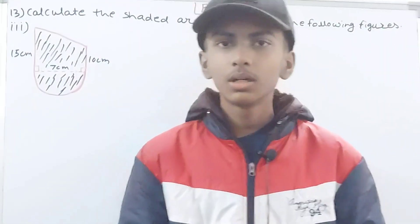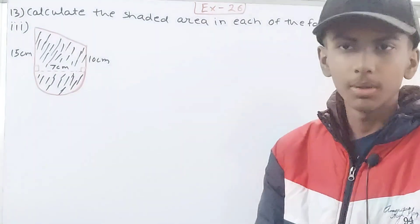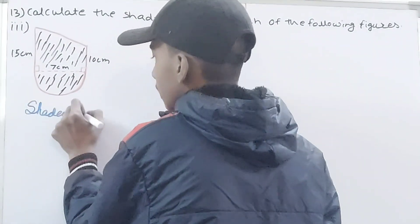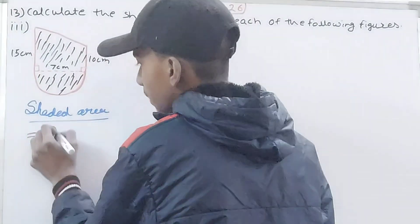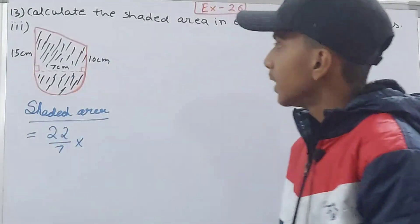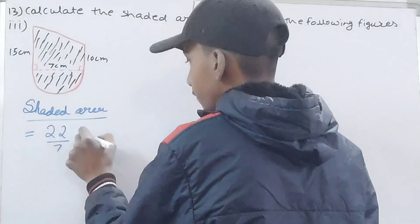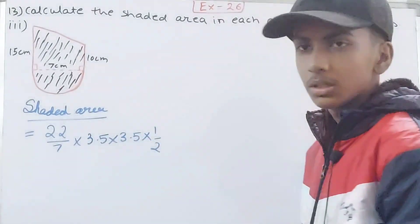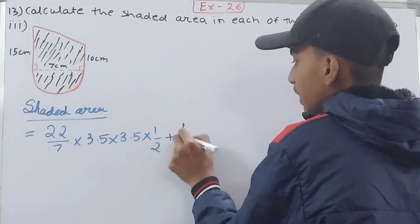Let's move on to part three. Here we have two figures: one semicircle and one trapezium. We'll calculate the areas separately. The shaded area equals area of semicircle plus area of trapezium. For the semicircle: π r² / 2 = (22/7) × 3.5 × 3.5 × (1/2), since the diameter is 7 centimeters so radius is 3.5 centimeters.